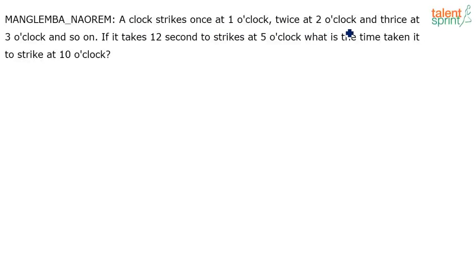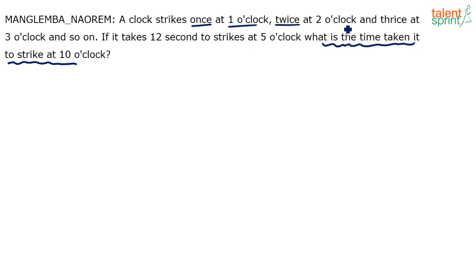The clock strikes once at one o'clock, twice at two o'clock, and thrice at three o'clock, and so on. If it takes 12 seconds to strike at five o'clock, what is the time taken to strike at ten o'clock? There are some grammatical errors but the context is clear. Basically, when it is four p.m. the clock strikes four times, six p.m. it strikes six times — by the number of strokes you can tell the time.